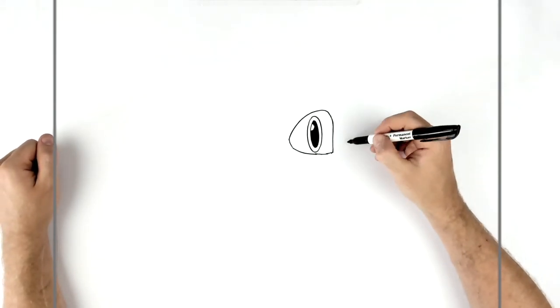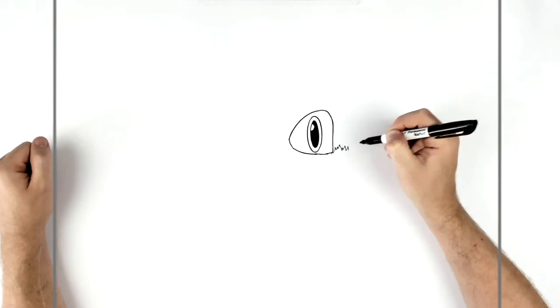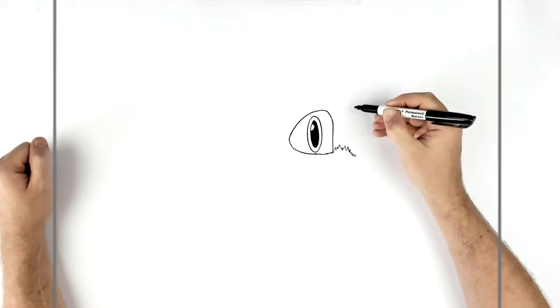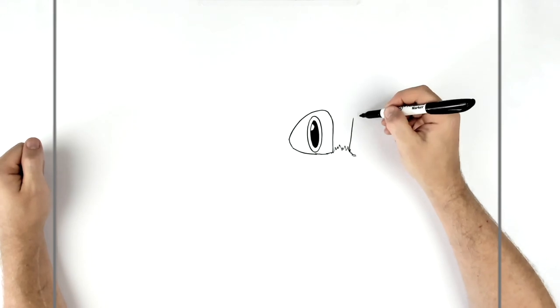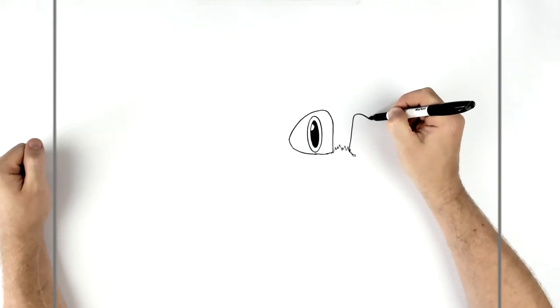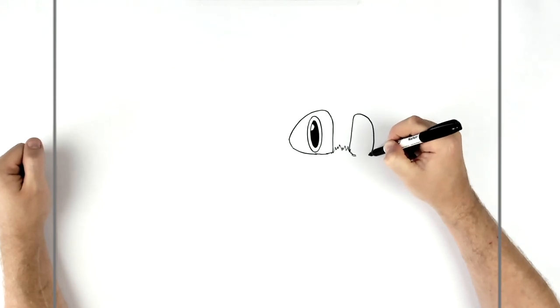So then the other eye. We've got sort of this like hairy white section that joins them together, and then the other eye goes up, around like this, and back in.